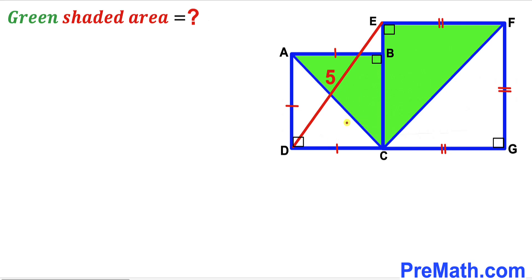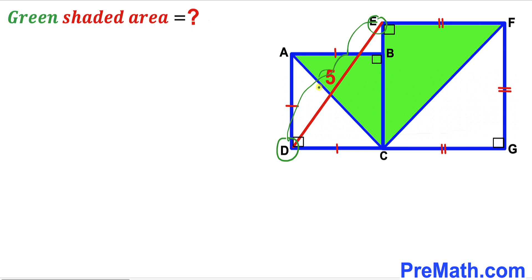Welcome to pre-math. In this video we have got two squares. The first square ABCD and the other square EFGC are put together as shown in the given diagram, such that the distance between vertices D and E is 5 units. Our task is to calculate the area of the green shaded region.